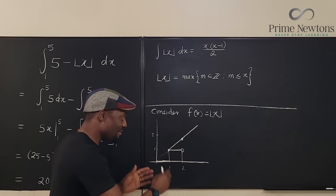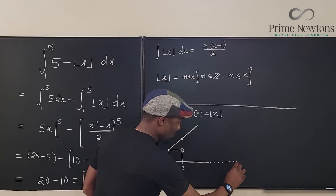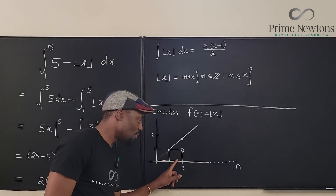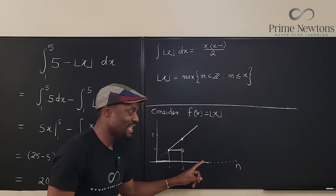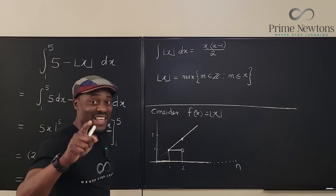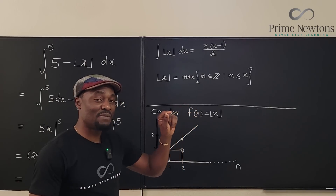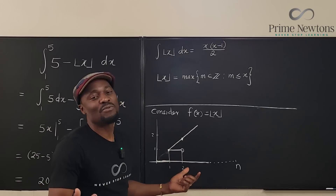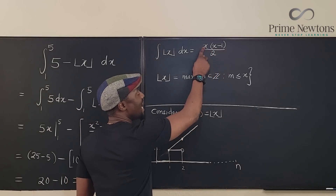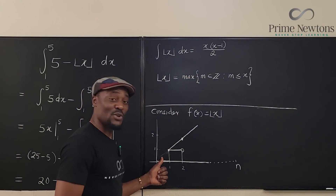If you go to n, you'll have n minus 1 rectangles — not n — because the first one is eliminated. That's why the formula changes from n times (n + 1) to (n minus 1) times n. This is exactly why we modified the sum formula: we lost one rectangle at the beginning.